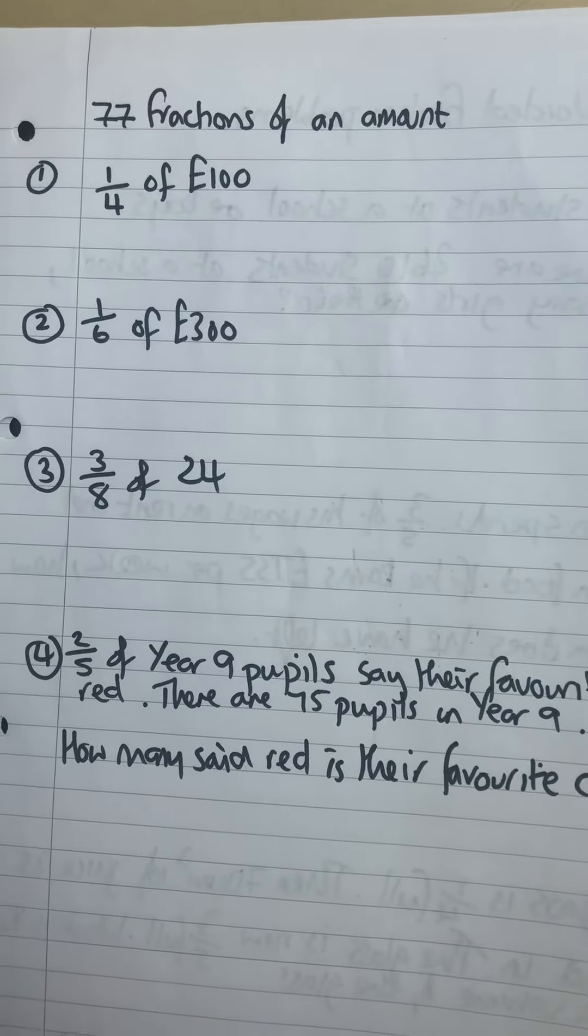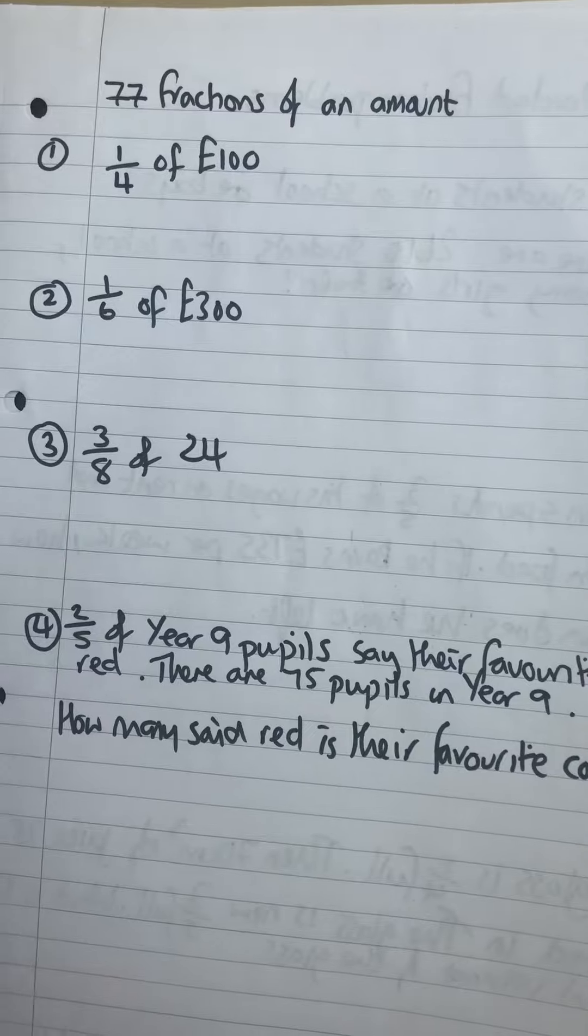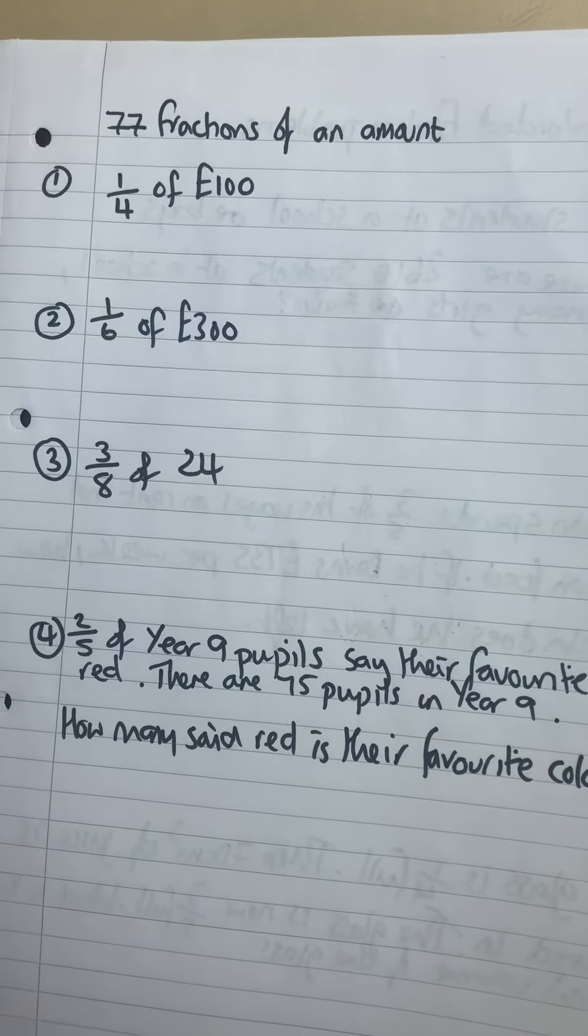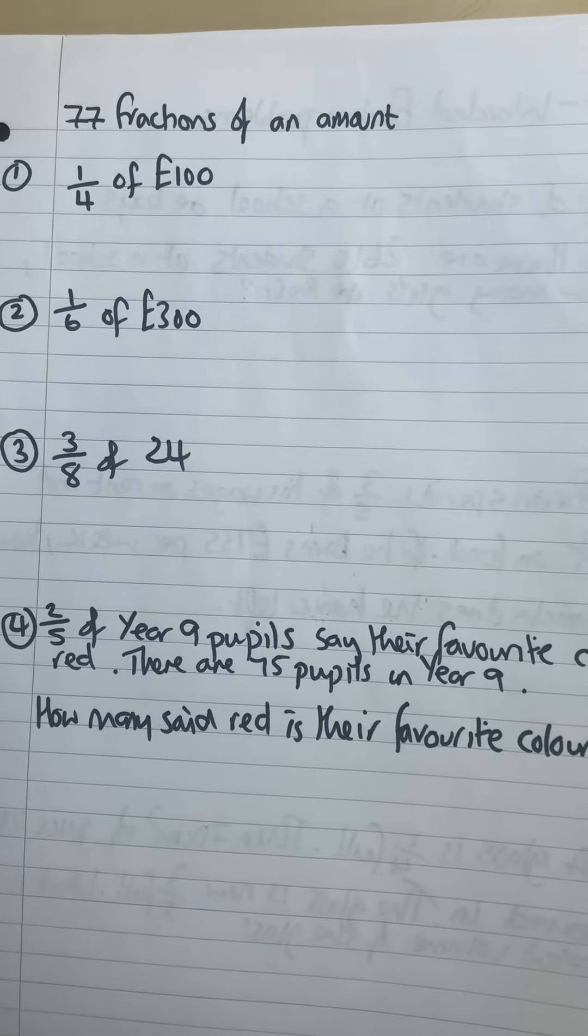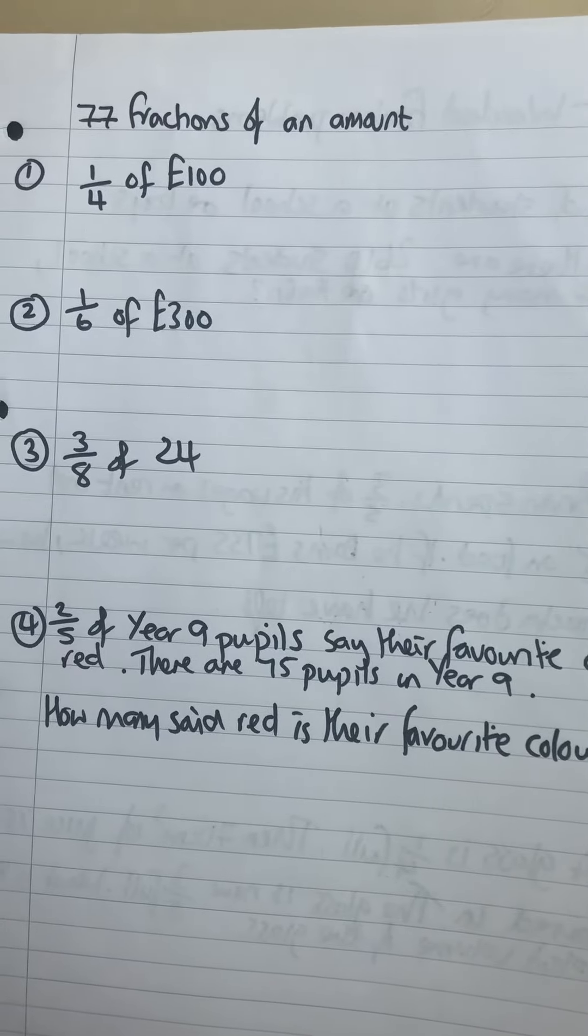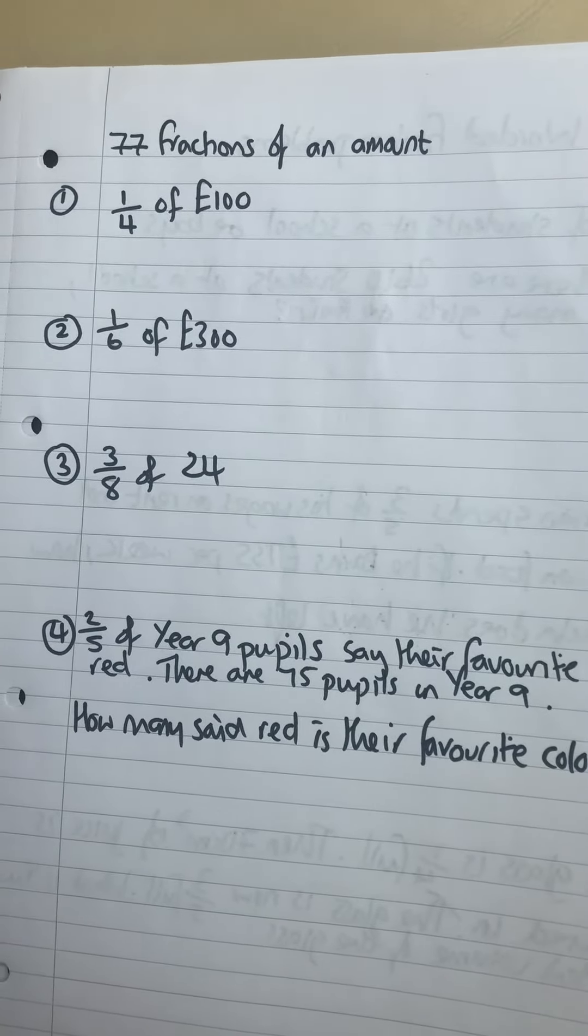Clip 77, fractions of an amount. So the first two questions on this are really easy. The third one is a little more difficult and then the final one's got words in. So question one: quarter of 100.